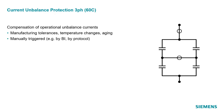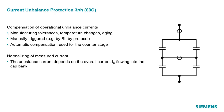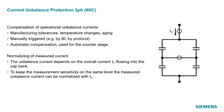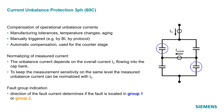The compensation can be performed manually, triggered by a binary input or via protocol, or automatically. In the automatic case, every slowly occurring unbalanced current will be slowly subtracted from the measured current. For the counter stage, the automatic compensation is mandatory. Regarding normalization of measured currents: the unbalanced current depends on the overall current IC flowing into the capacitor bank. To keep the measurement sensitivity at the same level, the measured unbalanced current can be normalized with IC. The direction of the unbalanced current allows finding the location of the faulty element — it can be assigned to group one or group two.